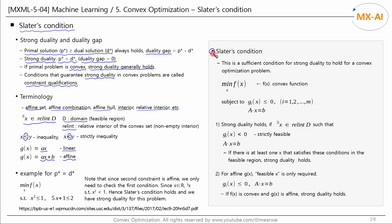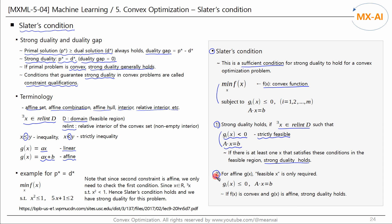Now let's look at the definition of Slater's condition. The Slater's condition is a sufficient condition for strong duality to hold for a convex optimization problem. If there is at least one x that satisfies these conditions in the relative interior of the feasible region, strong duality holds. These conditions are that g of x is always negative — that is, strictly feasible — and ax equals b. If g of x is affine, feasible x is only required; that is, g of x can be equal to zero. In other words, if f of x is convex and g of x is affine, strong duality holds.